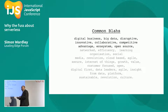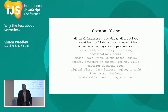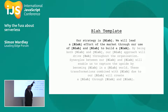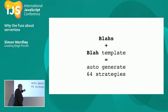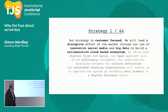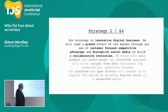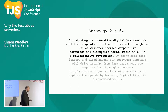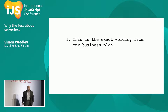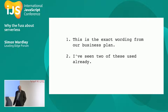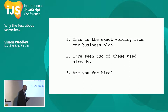I took all these companies' strategy documents and created a BLAS template: 'Our strategy is BLAS; we will lead a BLAS effort in the market through our use of BLAS and BLAS to build a BLAS.' I auto-generated 64 strategies at random — things like 'Our strategy is customer-focused, we will lead a disruptive effort through our use of innovative social media and big data to build a collaborative cloud-based ecosystem.' I sent this to a huge number of people and got 400 responses of three types: 'This is the exact wording from our business plan,' 'I've seen two of these used already,' and my favorite: 'Are you for hire?'